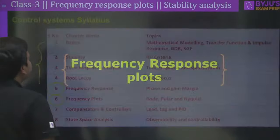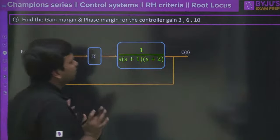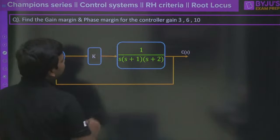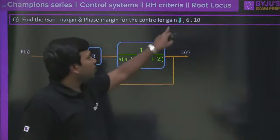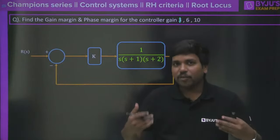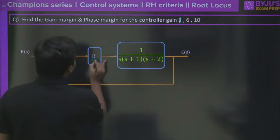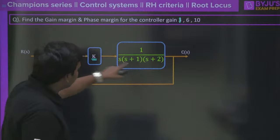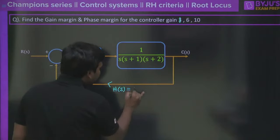Without further delay, let's get into the topic. We are here to discuss frequency response plots and then stability analysis, especially gain margin and phase margin — how they are related to the plots as well as to the root locus. Let me start with the first question. Find the gain margin and phase margin for the controller gain; let me take K=1 instead of K=3 because the numbers will be easier. The open loop transfer function G(S)·H(S) combines to K divided by S(S+1)(S+2), with H(S)=1.